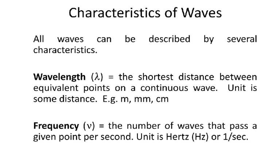All waves can be described by several characteristics. There's wavelength, which is the shortest distance between equivalent points on a continuous wave. The unit is some sort of distance like meters, millimeters, or centimeters. The two most commonly used are meters and millimeters; every once in a while we'll use centimeters, but that's only if it's kind of in between.